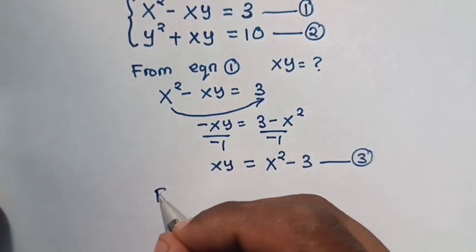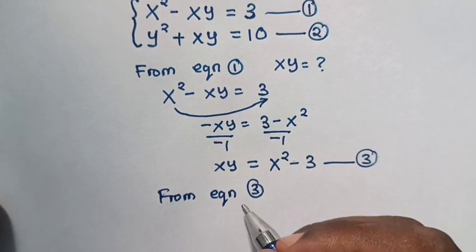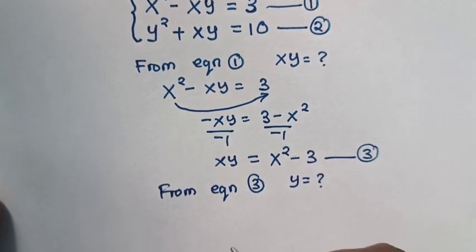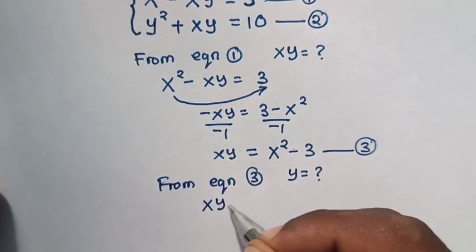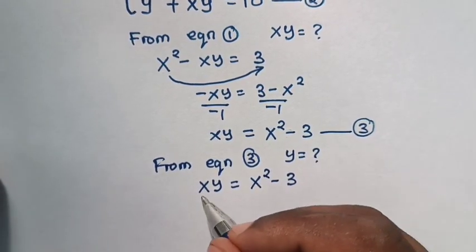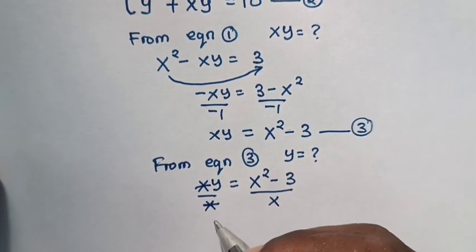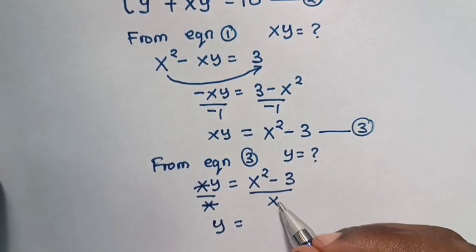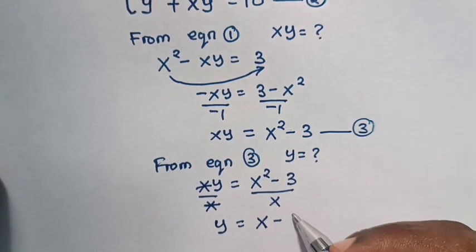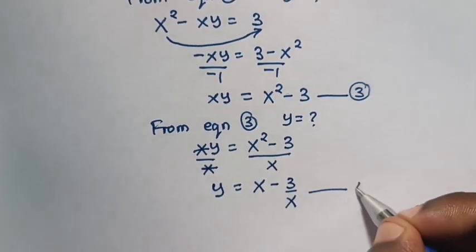Next, from equation 3, what is equation 3 in terms of y? From xy equals x squared y minus 3, we divide by x on both sides, so x and x cancel. Then y equals x squared y divided by x minus 3 over x, which simplifies to y equals x minus 3 over x. This will be equation 4.